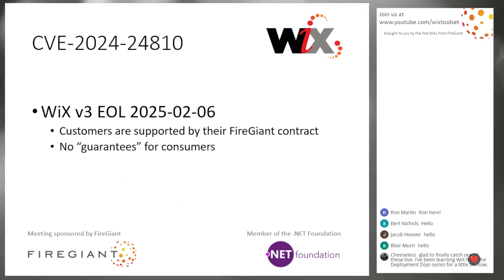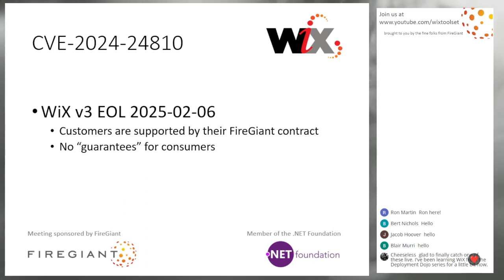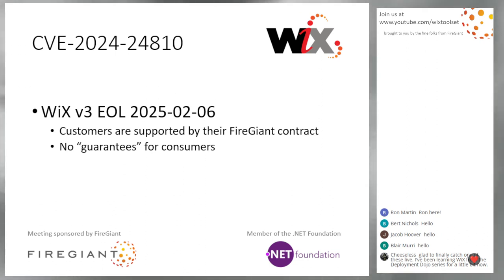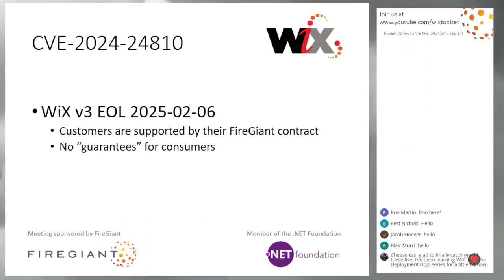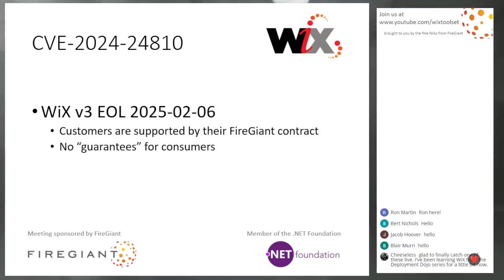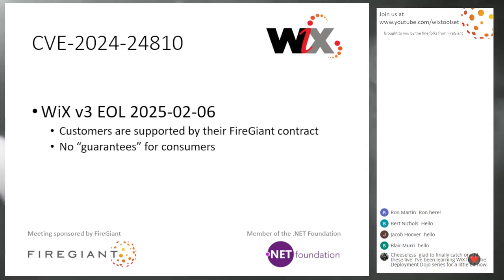So I want to be very clear: you get a year. If you're on Wix 3, you should be making a plan. Go talk to FireGiant, get a contract to say you need to stay on 3 for longer — we have some people with a reason for that. Or go, we need to move to Wix 4 or Wix 5, which is coming soon and we'll talk about next. You need to figure out those plans. The door is closing on V3 — it's way late, we should have done this a long time ago. This has been an expensive thing for us, but we're taking care of it. We'll handle it for another year and then we are very much done with this.